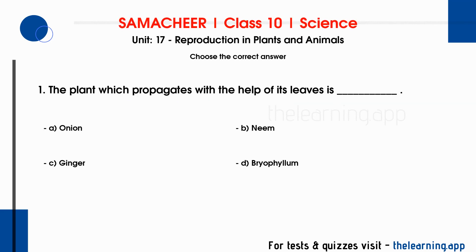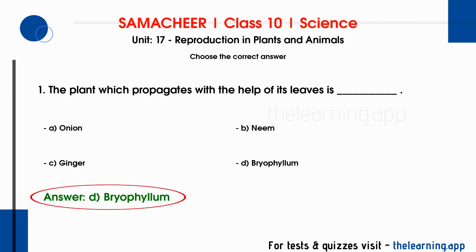The plant which propagates with the help of its leaves is called DASH. Options are A. Onion, B. Neem, C. Ginger, D. Bryophyllum. The correct answer is option D, Bryophyllum.